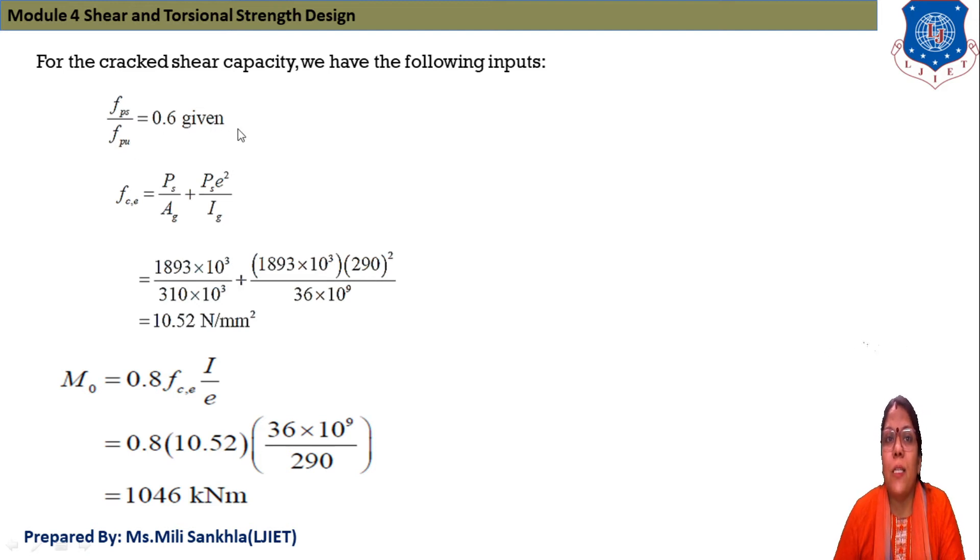Vp is our vertical component of tendon, that is given at 3°, so 1893 prestressing force P and sin 3° and answer equals 547.3 kN. Now next for cracked shear capacity we put following equation. fpe/fpu is 0.6 as given in data because 60% strength. fce equals Ps/Ag + Pse²/Ig.